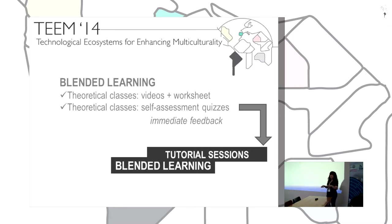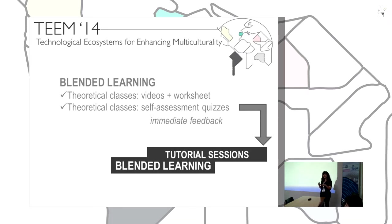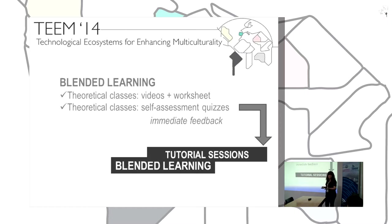The blended learning structure was as follows: theoretically, there were no face-to-face classes. There were videos online and worksheets that students used while viewing the videos. Then there were optional self-assessment quizzes they could answer after viewing the videos to check if they had understood the content, with immediate feedback provided. This allowed them to go to tutorial sessions with the teacher if they felt they hadn't understood something.